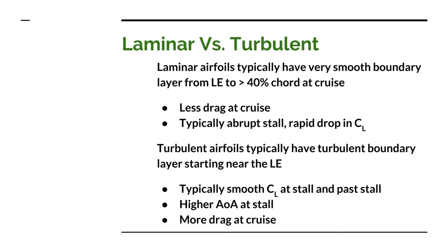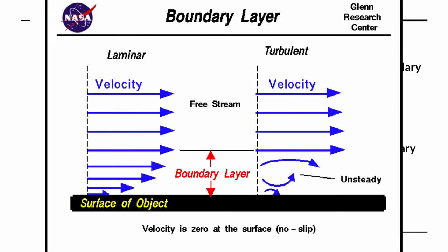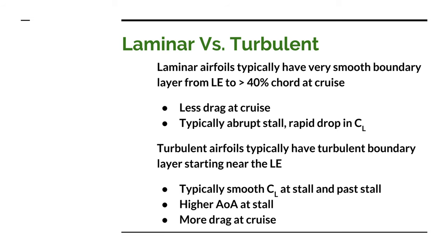Let's talk about the decision of a laminar versus turbulent airfoil. When we talk about laminar, we're talking about a boundary layer that flows very smoothly over at least the first 40% of the chord. Think of those fountains shooting smooth streams of water that arc up without breaking up — that's laminar flow. We're talking about that kind of flow right along the curvature of the airfoil. Laminar airfoils have very low drag.